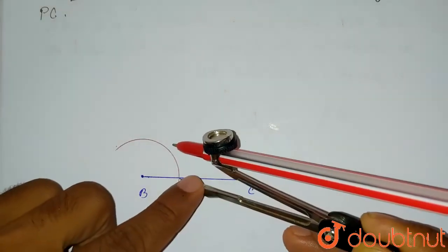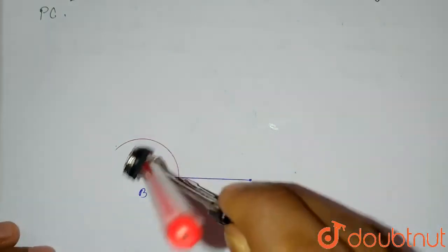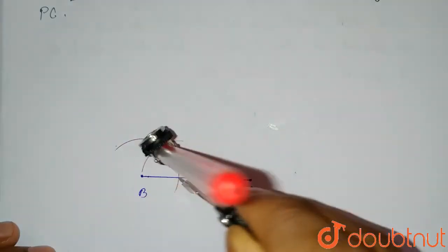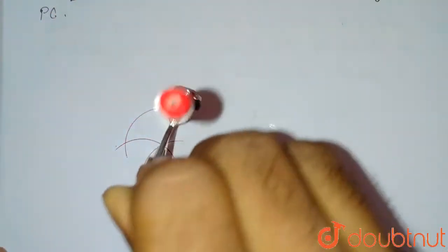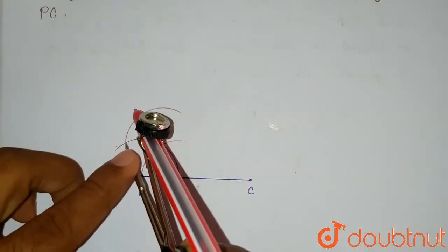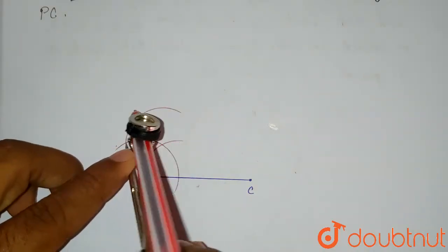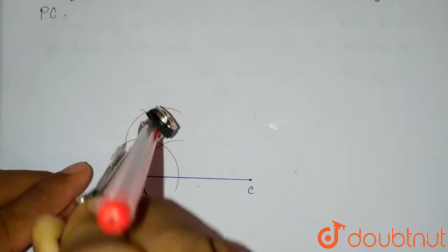From this intersecting point, draw another arc and from here draw another one. And from this intersecting point, we have to draw the final arc for 90 degrees.